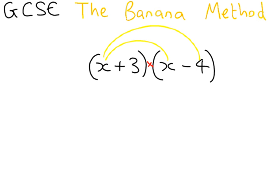And the way that we do this is the banana method. So, we draw our banana on, making sure it goes from the first term to the two terms in the second bracket, and from the second term to the two terms in the second bracket. This way we ensure that we have done every single multiply that we need.